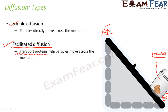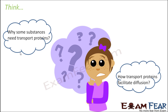In facilitated diffusion, the particles cannot move on their own from region of high to low concentration — they need carrier proteins or transport proteins to carry them. This raises a few questions: how do transport proteins facilitate diffusion? How are transport proteins able to carry substances? Why is it that only some substances need transport proteins? Why are not all substances able to move across a membrane by simple diffusion? What is so special about some substances that they cannot cross the membrane even from a region of high concentration to low concentration? We will answer these questions to understand facilitated diffusion.